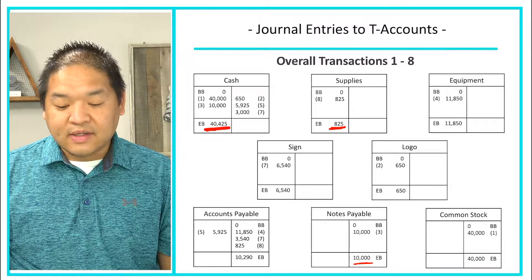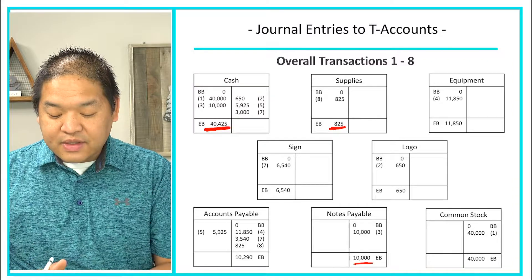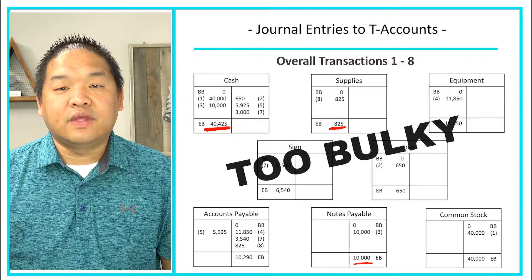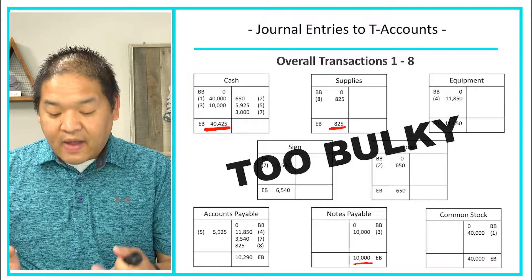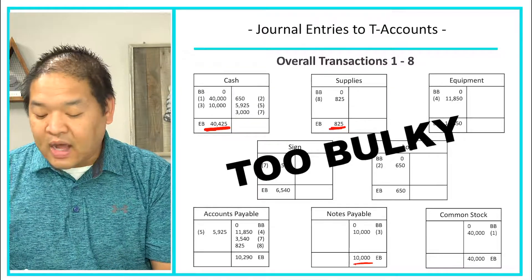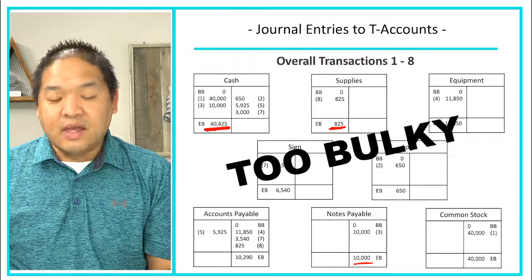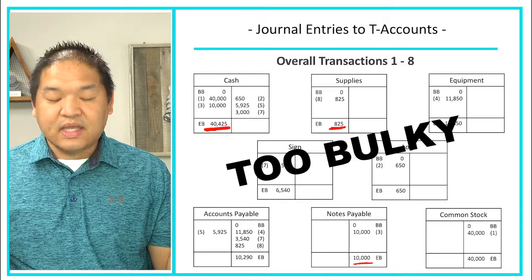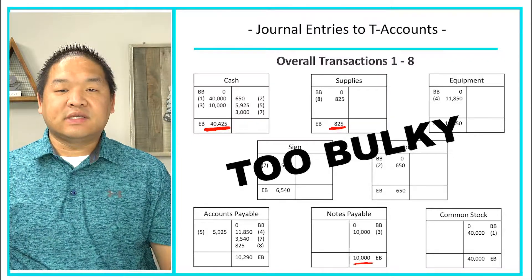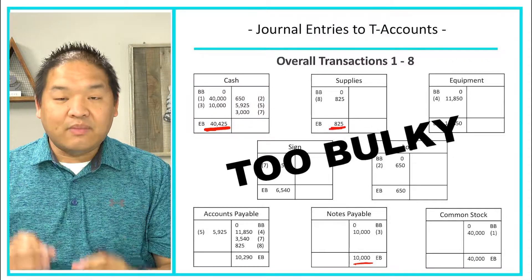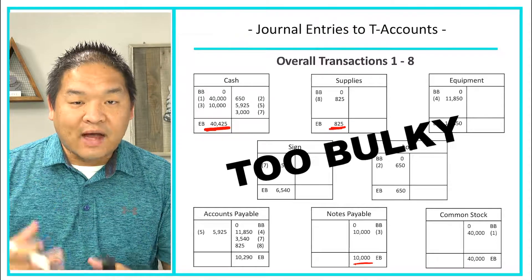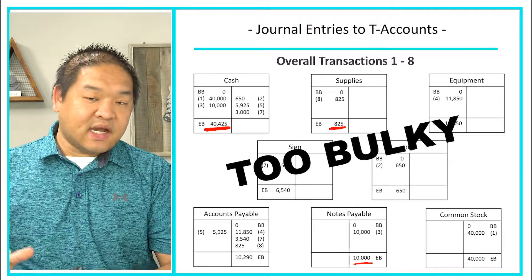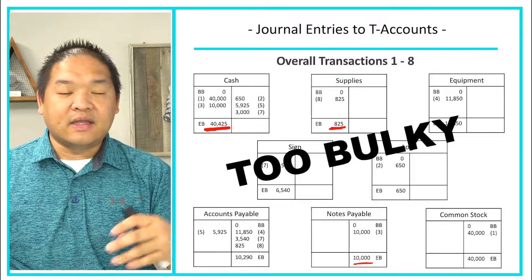The problem with the T-accounts is that they're just too bulky. If you gave this to a manager, they wouldn't know exactly what it meant — they'd just want the ending balances because that's what helps with analysis. So we don't just want to print this out and give it to a supervisor.